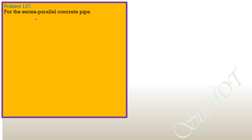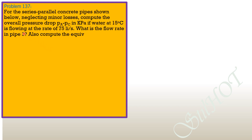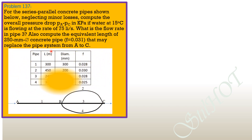Problem 137: For the series-parallel concrete pipe system shown, neglecting minor losses, compute the overall pressure drop P_A minus P_C in kilopascals if water at 15 degrees Celsius flows at 75 liters per second, and find the flow rate in pipe 3. Also compute the equivalent length of a 250 mm diameter concrete pipe with friction factor 0.031 that may replace the pipe system from A to C. The total head loss from A to C equals head loss in pipe 1 plus head loss in pipe 3, since pipes 2, 3, and 4 are parallel.